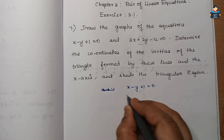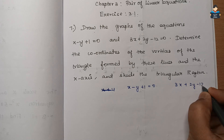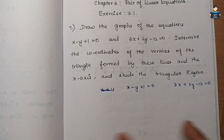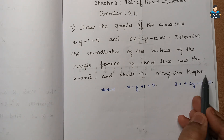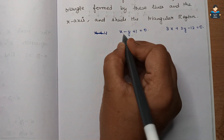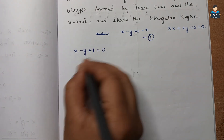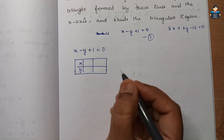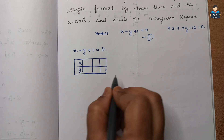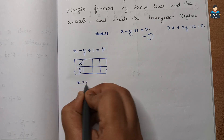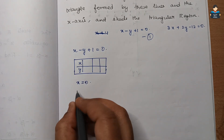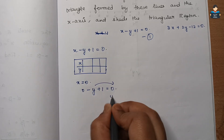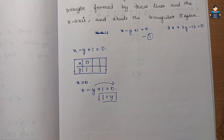For equation 1, x minus y plus 1 equal to 0, we will form a table. We need a maximum of 3 values. Substituting x equal to 0: 0 minus y plus 1 equal to 0, so y equal to 1. So x value 0 gives y value 1.